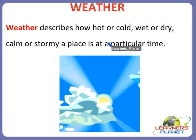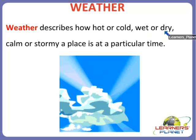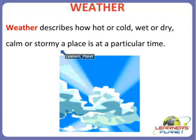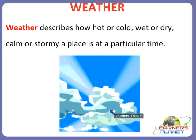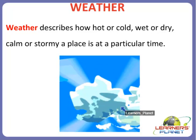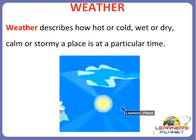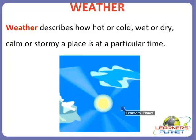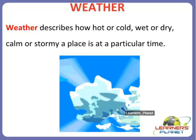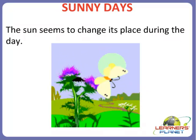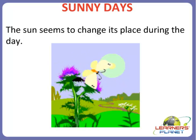Weather describes how hot or cold, wet or dry, calm or stormy a place is at a particular time. You can see in the picture how hot or cold, wet or dry, calm or stormy a place is — weather describes all such things. Changes in the weather are caused by the sun, wind and water vapor in the air.